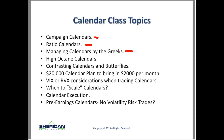We'll cover managing calendars by the Greeks — what does it mean when your delta, gamma, and theta are at certain numbers, and what would be ideal Greeks depending on certain market conditions? For example, if VIX is a little higher, what do you want your deltas to be? High octane calendars would be ones where maybe my short option expires in two days. Then we'll contrast calendars and butterflies — they both have very similar P&L graphs, so which one is better and when would you trade one versus the other? We'll also look at a plan with a $20,000 calendar account to bring in $2,000 per month.